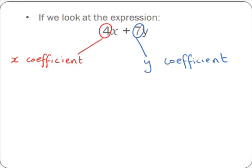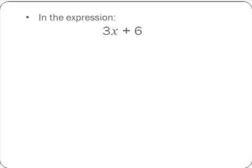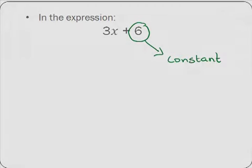And finally, in the expression 3x plus 6, the 6 is known as the constant, because it is not multiplied by any variable. By variable, we mean x or y or a or b.